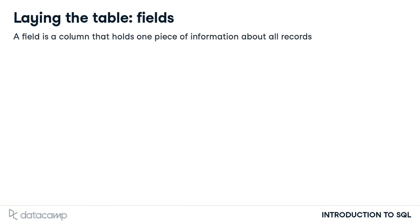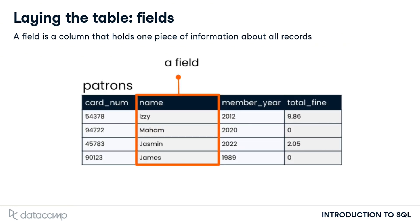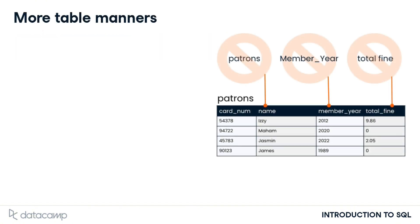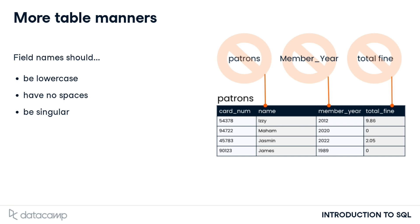A field is a column in a table. It holds one piece of information about all observations in the table. The name field in the patrons table lists all of the names of our library patrons. Because field names must be typed out when querying a database with SQL, field naming is important. Generally, field names should be lowercase and should not involve spaces. A field name should be singular rather than plural because it refers to the information contained in that field for a single record.